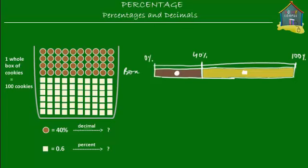Percentages, fractions, and decimals are all related to each other. In a previous lesson you learned how to convert a percentage to a fraction. So to find the equivalent of a percentage in decimal, we're going to first convert this percentage to a fraction and then see if there's a way to convert it to a decimal.